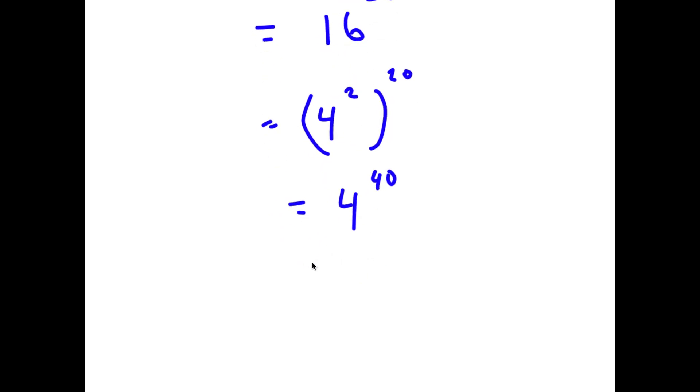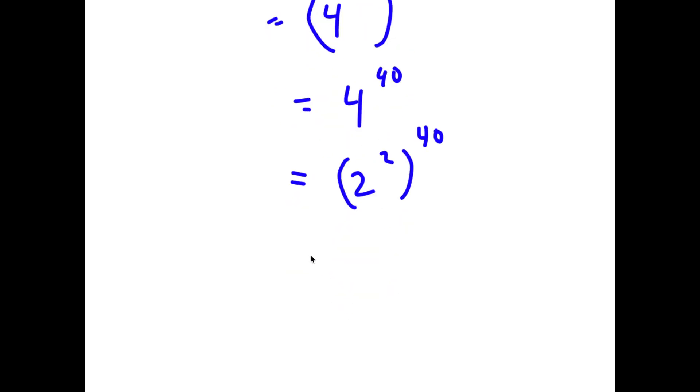And 4 is the same thing as 2 to the power of 2, so now I have 2 to the power of 2 to the power of 40, which is equal to 2 to the power of 80.